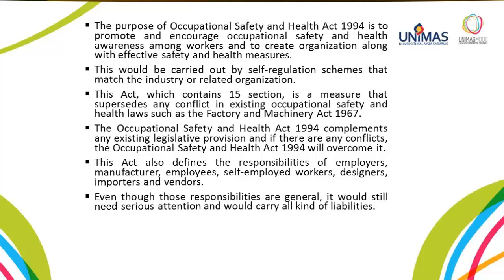The purpose of the Occupational Safety and Health Act 1994 is to promote and encourage occupational safety and health awareness among workers, and to create organisations along with effective safety and health measures. These would be carried out by self-regulation schemes that match the industry or related organisation. This Act, which contains 15 sections, supersedes any conflict in existing occupational safety and health laws such as the Factory and Machinery Act 1967. The Occupational Safety and Health Act 1994 complements any existing legislative provision, and if there are any conflicts, OSHA 1994 will overcome it.